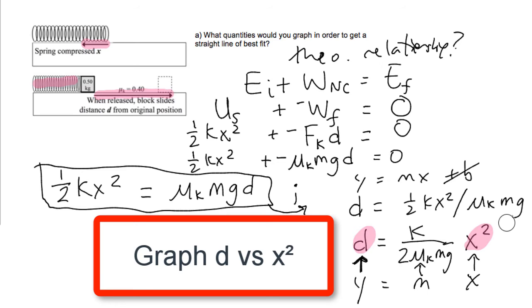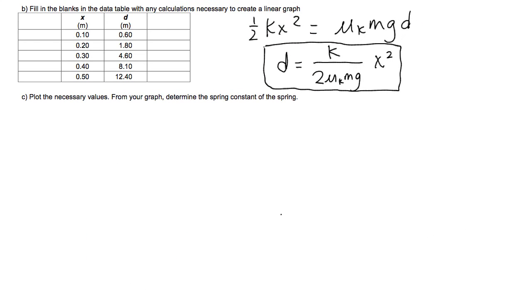Now, of course, we could graph the square root of d versus x. But as mentioned before, it's going to be easier to calculate squares instead of square roots. So for part b, we now have to fill in the blanks in the data table with any calculations necessary to create a linear graph. So I've summarized the results of the last part here at the top. And what I want to do is plot the necessary values. Now, in order to do that, what is it that I need to calculate?